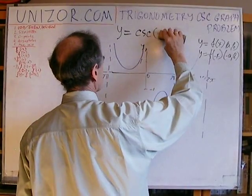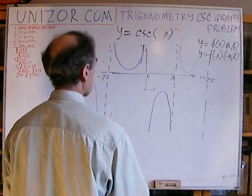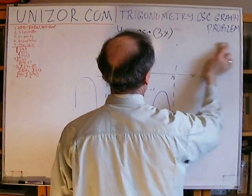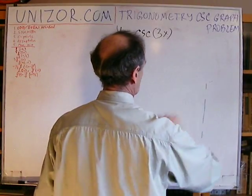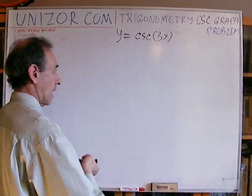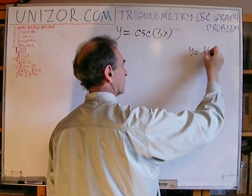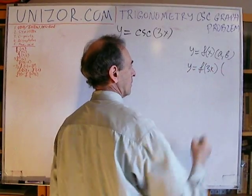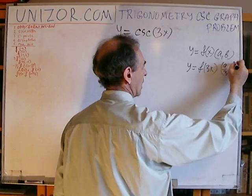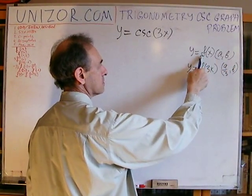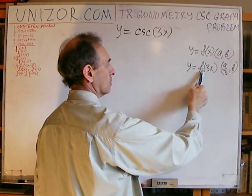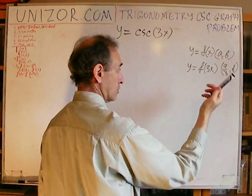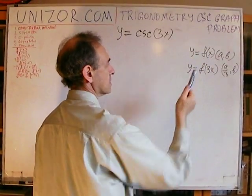Next problem: cosecant of 3x. Similar consideration: if point (a, b) belongs to this graph, which point belongs to the new graph? Obviously (a/3, b). If (a, b) belongs to this, then (a/3, b) belongs to the graph of this function, because substituting a/3 into x gives f(3 · a/3) = f(a) = b. So this satisfies the equation.